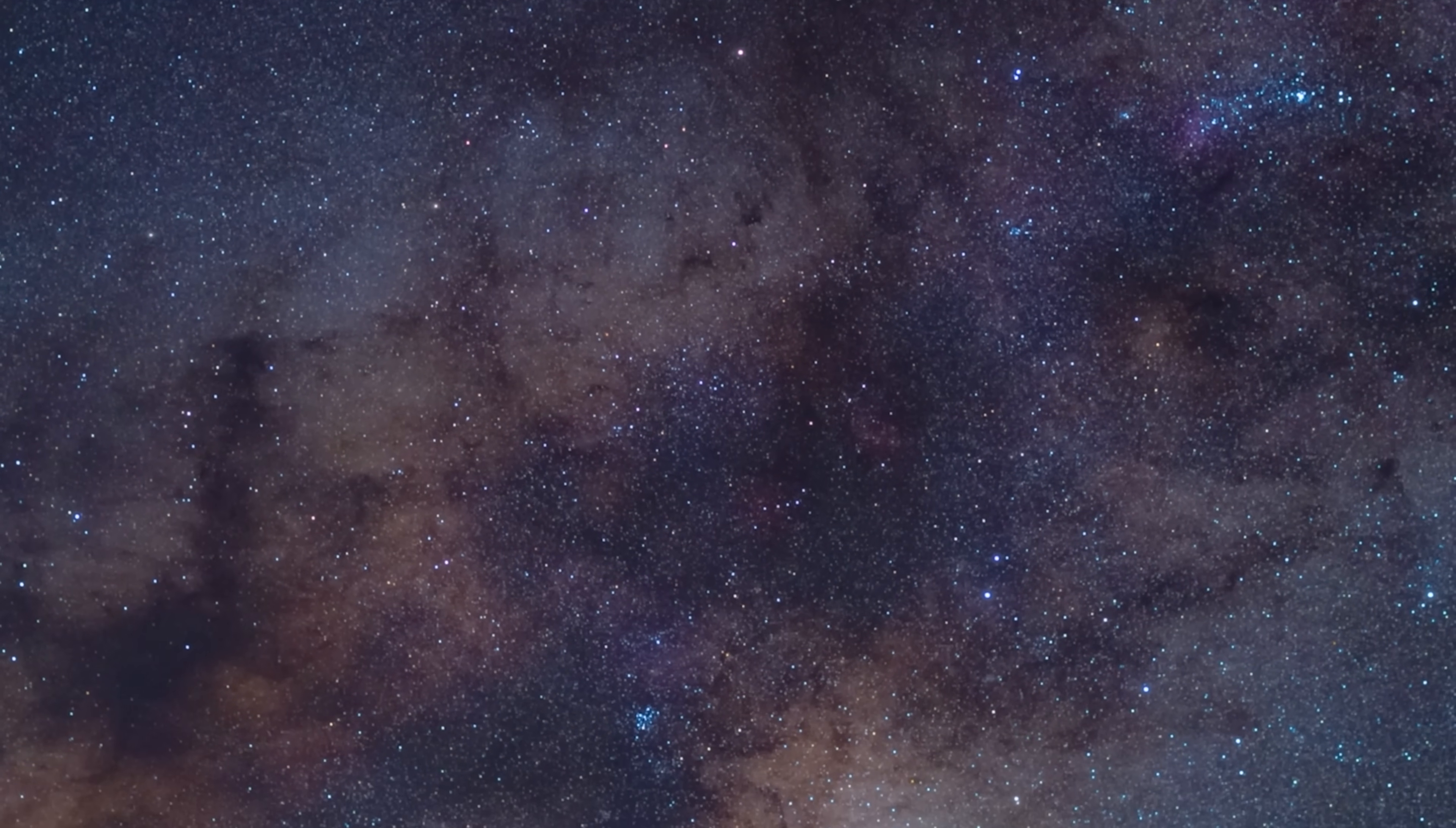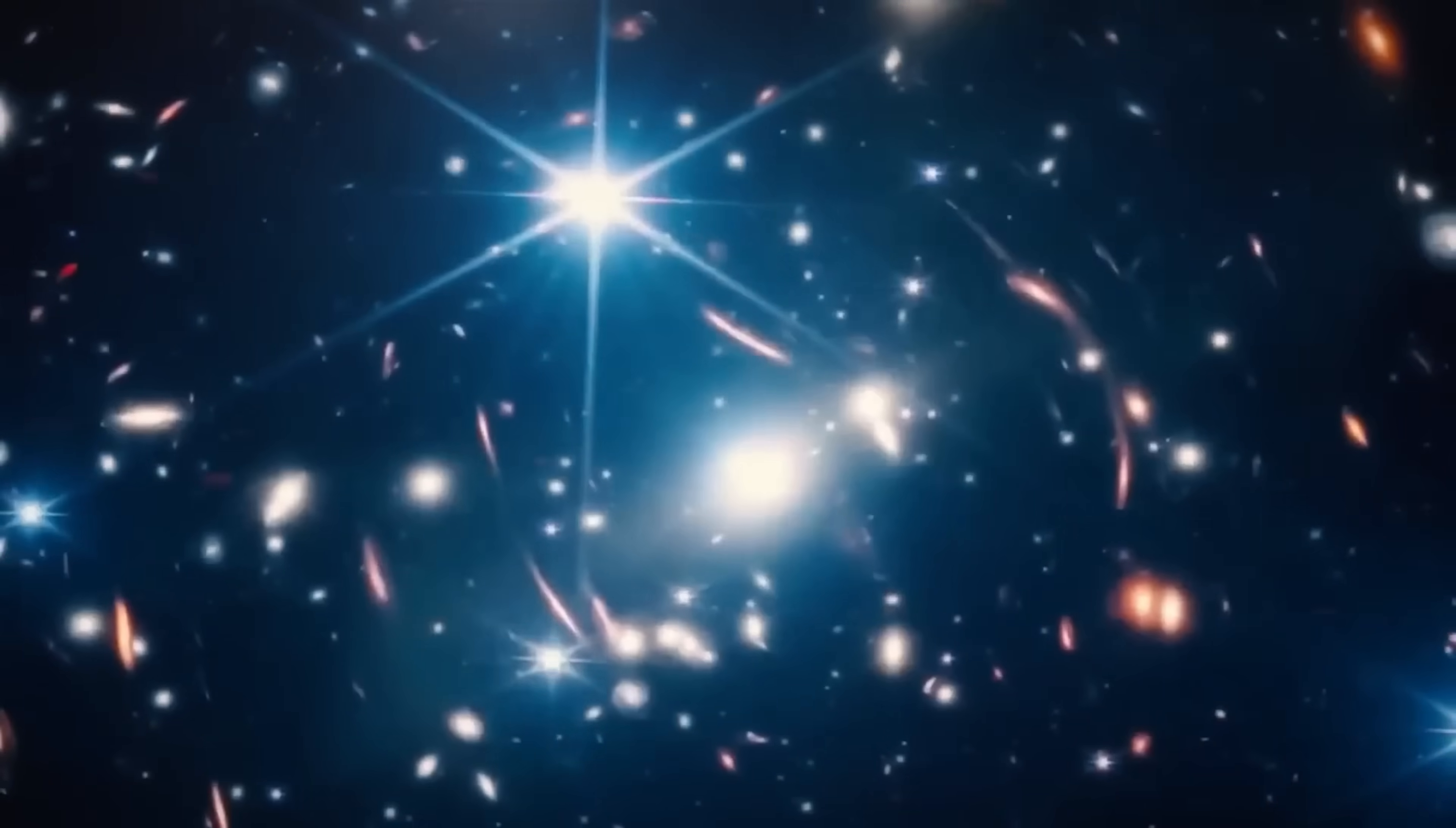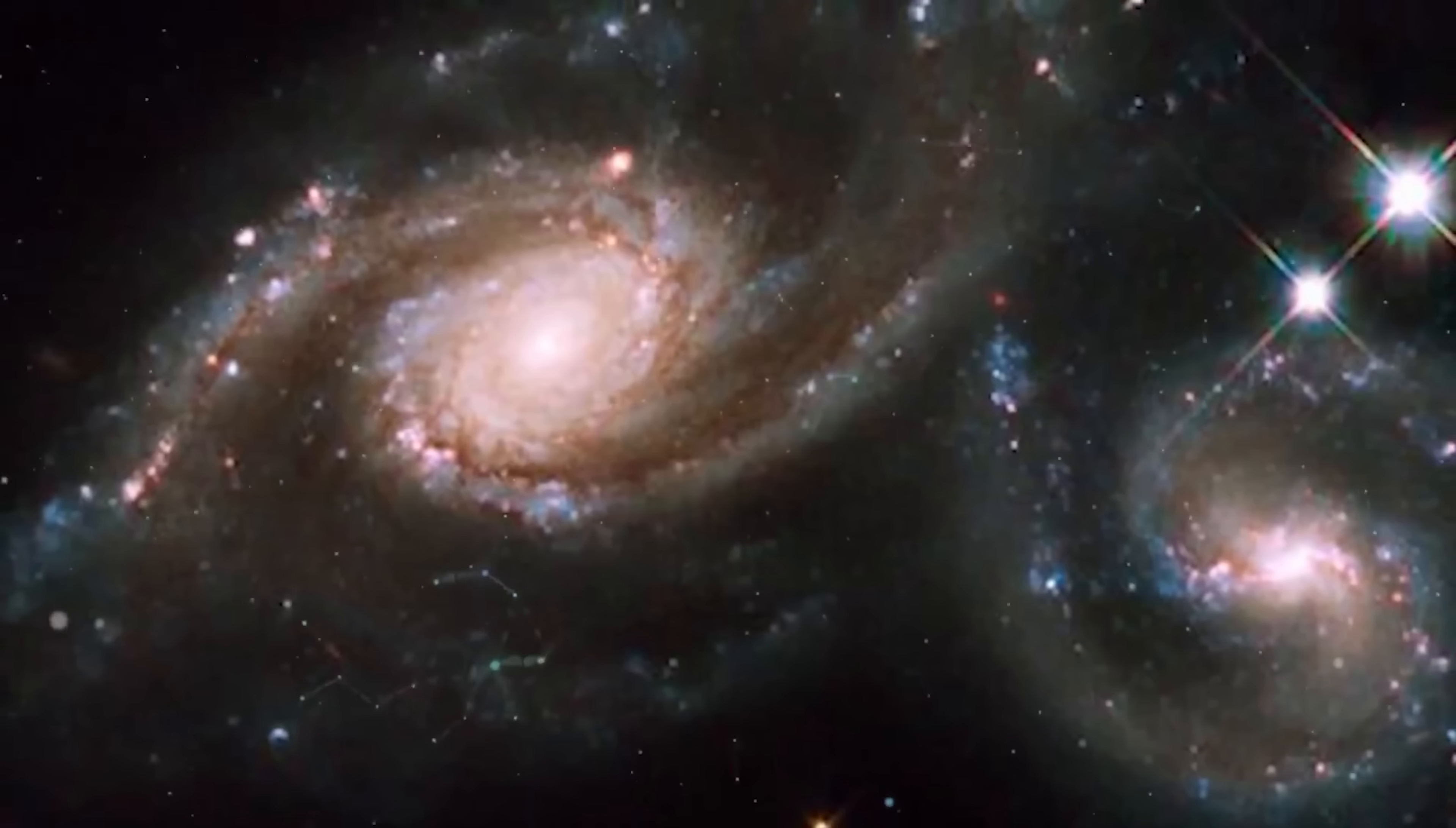It started quietly. A new round of deep-field images came in from Webb, crisp golden data filled with the faintest glimmers from the edge of time. Scientists began analyzing them, expecting to confirm what Hubble had shown decades before. But the numbers didn't add up. Webb was detecting galaxies too bright, too massive, and too ancient to fit within the known timeline of our universe.